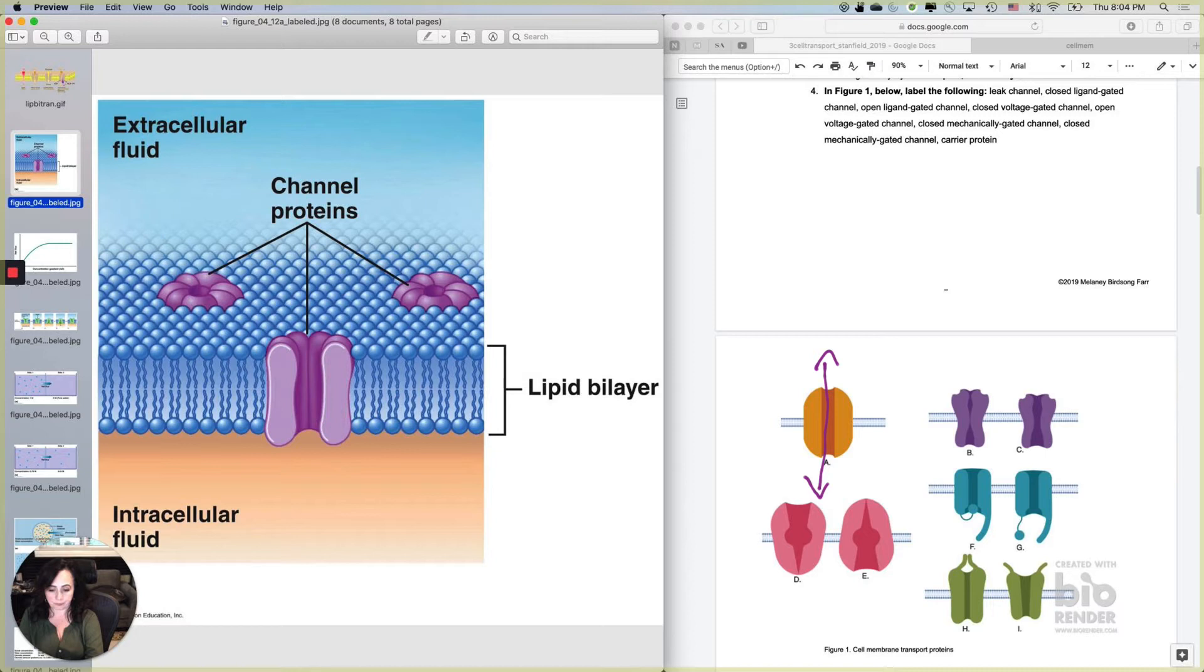They're really good for moving polar things through cell membranes, but some channels are open in certain circumstances and closed in other circumstances. What you're seeing right here, these are going to be what we call ligand gated channels. Do you see this little binding site right here? When ligands bind to those sites, this channel will go from, for instance, closed to opened.